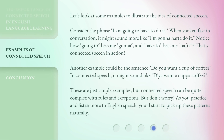Let's look at some examples to illustrate the idea of connected speech. Consider the phrase: 'I am going to have to do it.' When spoken fast in conversation, it might sound more like 'I'm gonna have to do it.' Notice how 'going to' became 'gonna' and 'have to' became 'hafta.' That's connected speech in action.